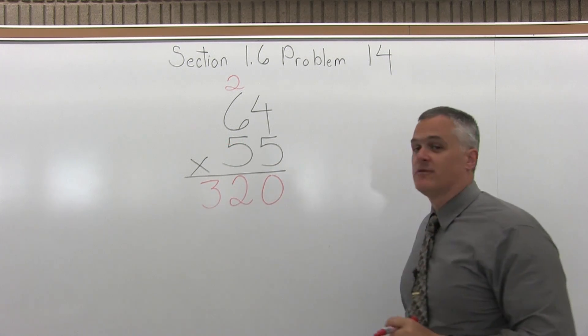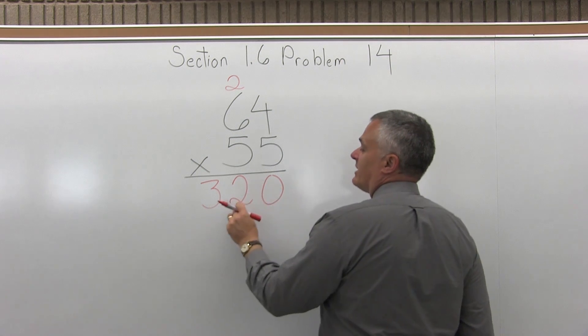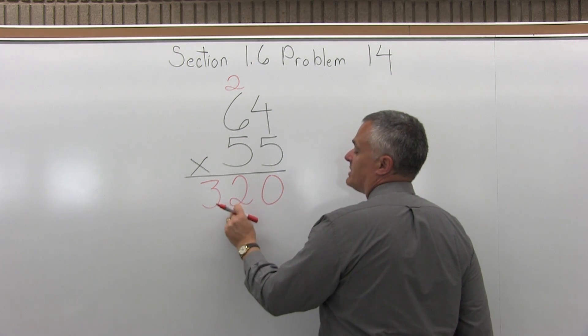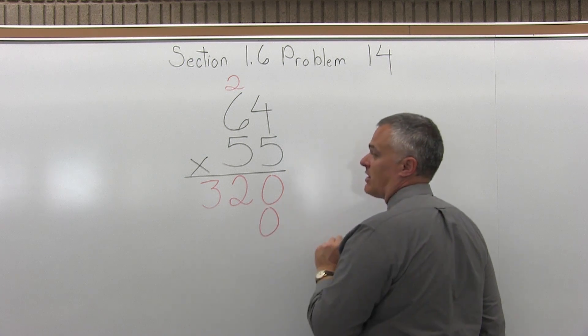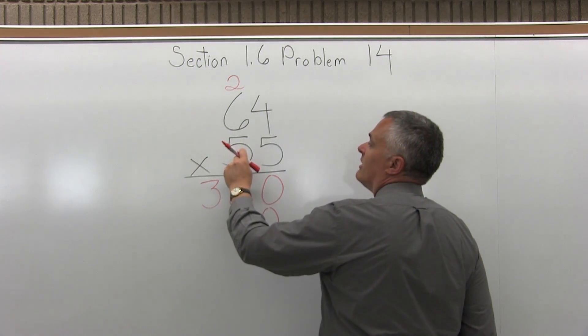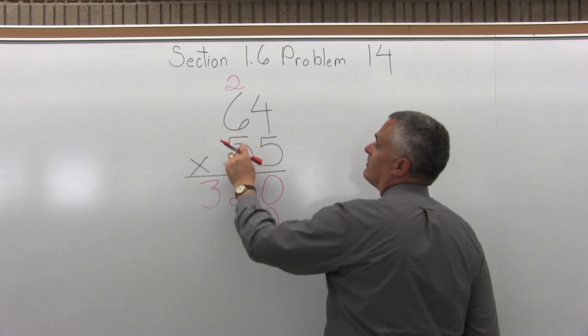Now, the leftmost 5 of the 55 gets multiplied times 64. Before I do that, I either have to remember to move over one position to the left for the next row or just fill in the first spot with a 0. And now I can do 5 times 4. It's going to be the same number, it's going to be 3, 2, 0 again. But we can do it out.